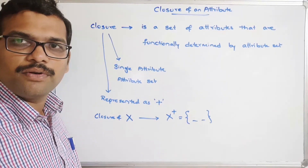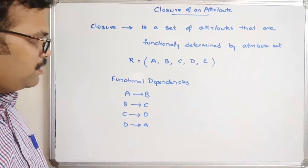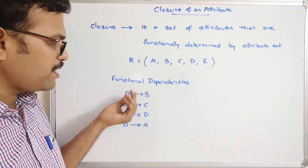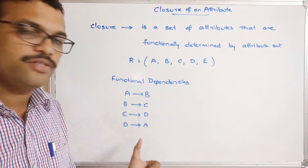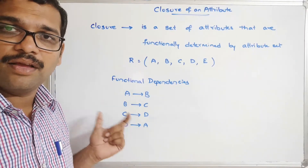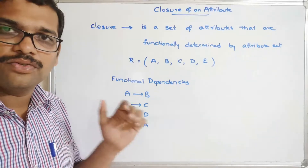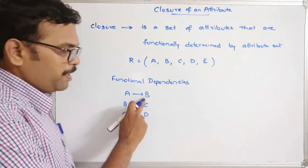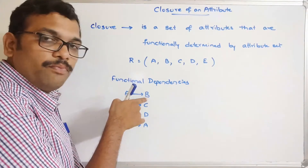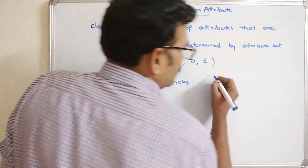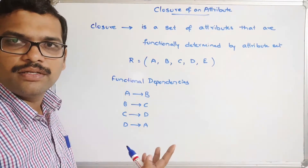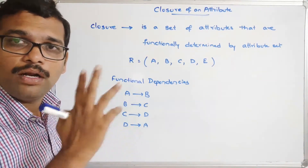Let us take an example. Consider a relation with attributes a, b, c, d, e, and the functional dependencies: a→b, b→c, c→d, and d→a. Here, a→b means b is functionally dependent on a — by knowing a, we can get the details of b. From these dependencies, we can find various closures, either for a single attribute or for multiple attributes.